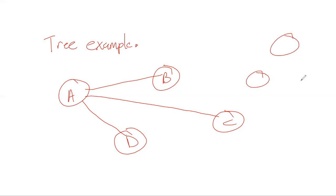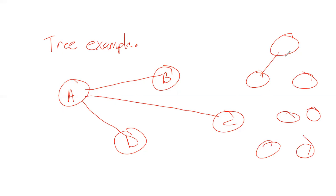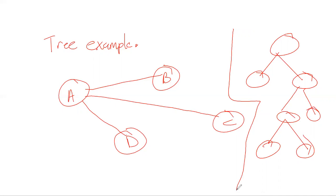Another good tree example has the same results: no cycles, it is connected, and there is a unique simple path between any two nodes on this graph. So it is a tree.